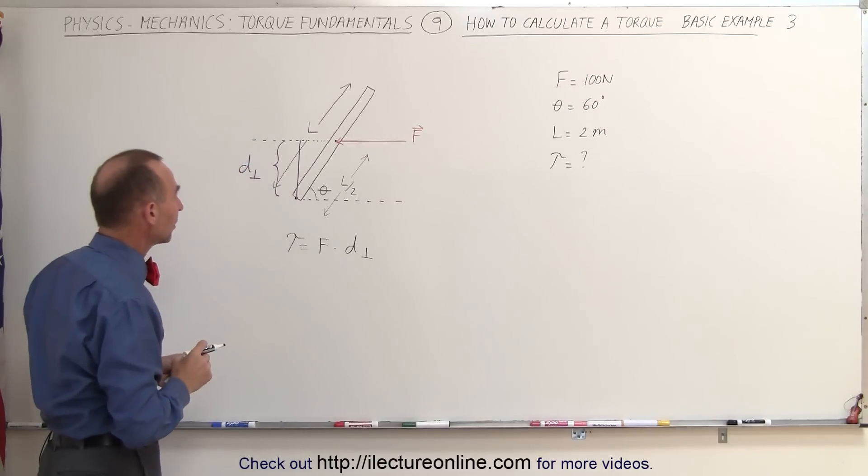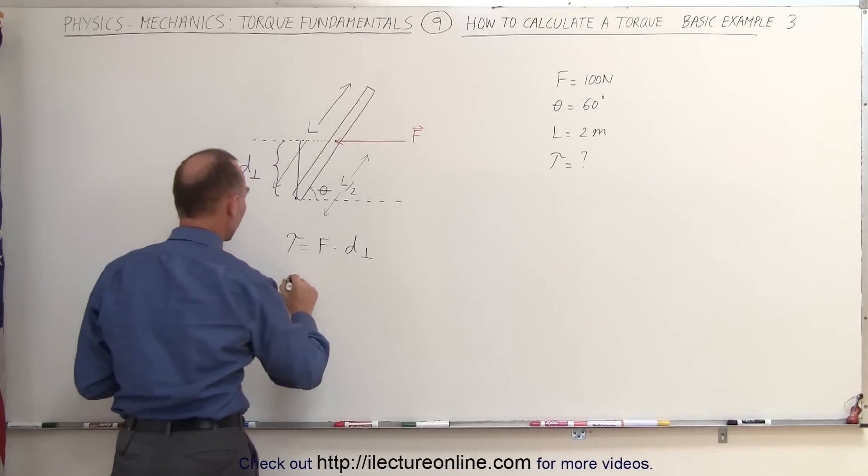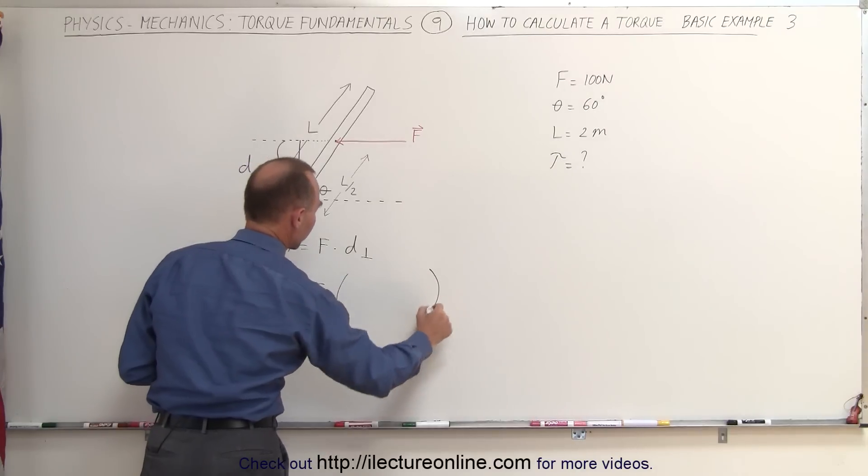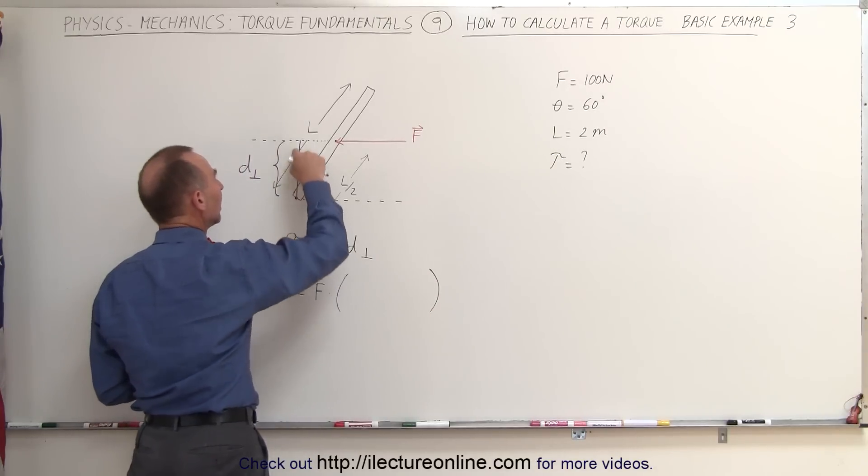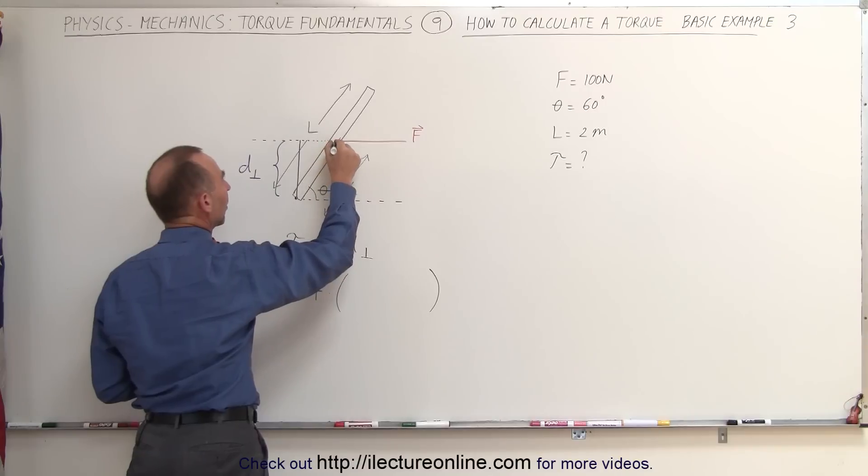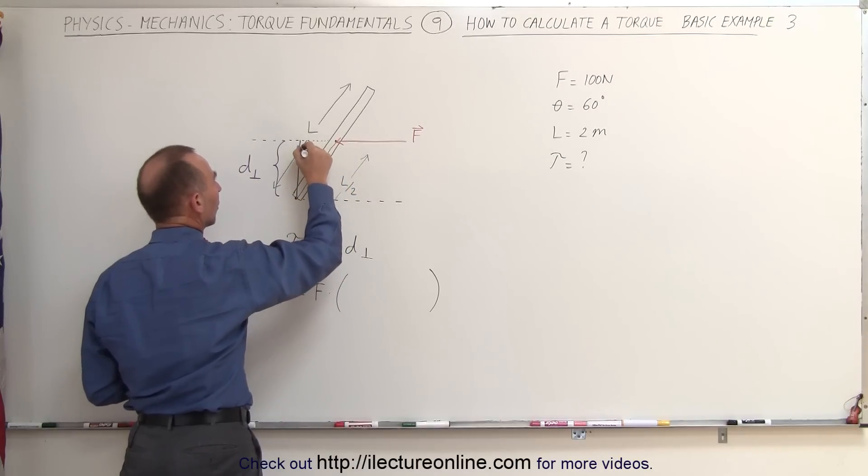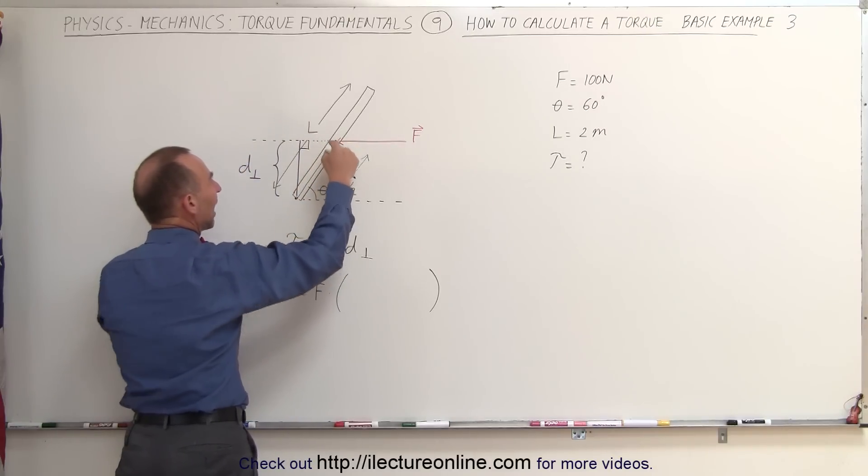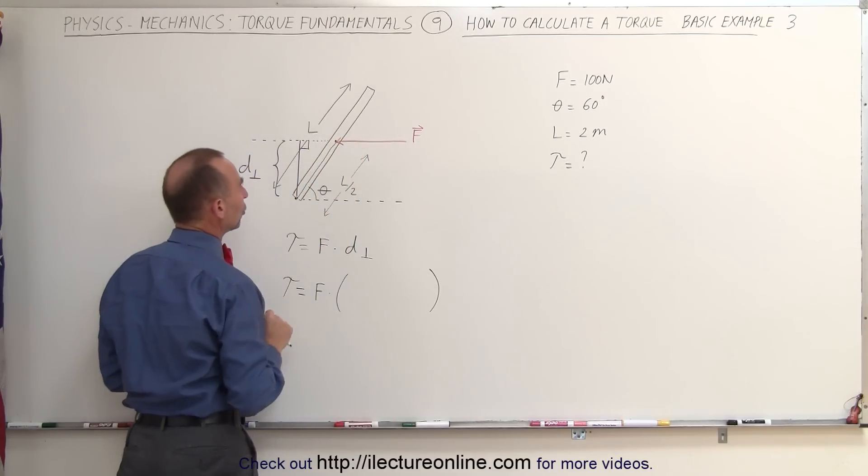How do we find that perpendicular distance? We'll do it as follows. The torque is equal to the force times... the perpendicular distance is one of the sides of this particular triangle. You can see here's a triangle. Here's the right angle, 90 degree angle. Notice that this is the hypotenuse, which is half the length of the beam, L over 2.